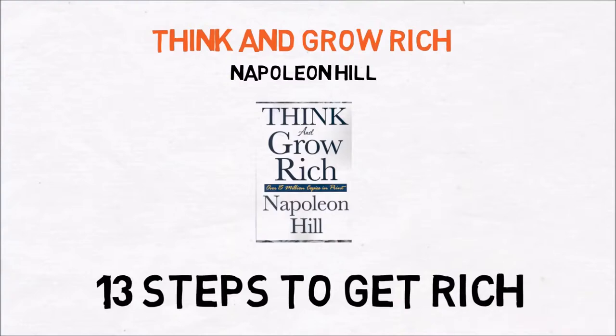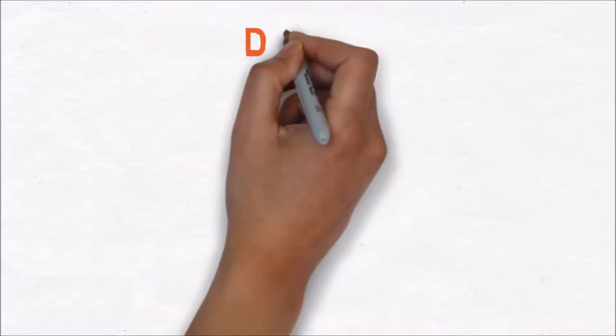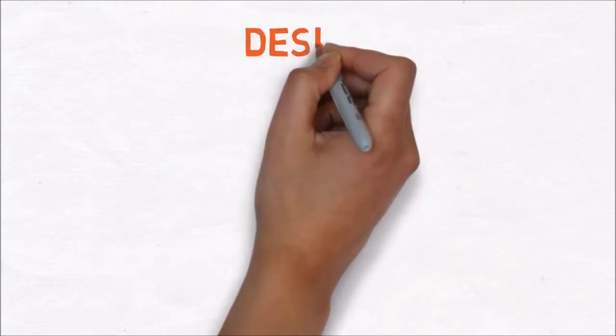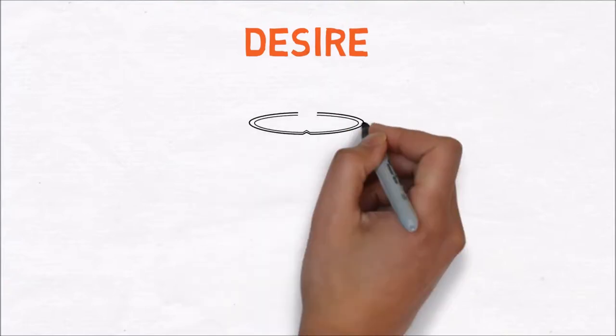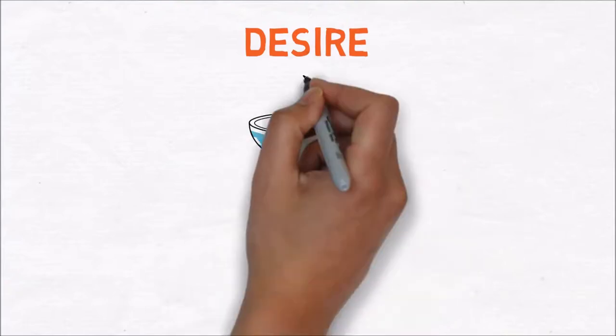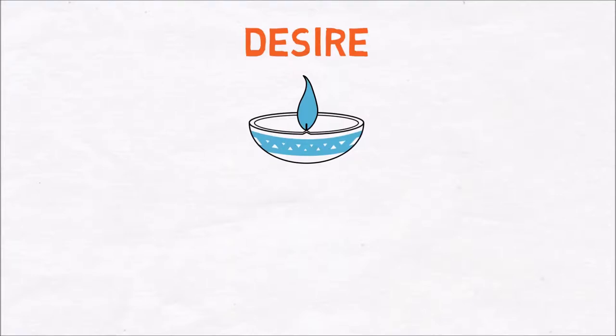The first step is desire. This one is maybe a little bit obvious but still very important. You need to have a really big desire to get rich. It's not about wishing or hoping but you need to have a strong desire with a good plan to reach your goal. Napoleon Hill made a six-part plan to reach a burning desire.